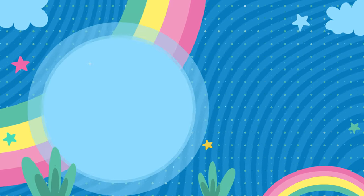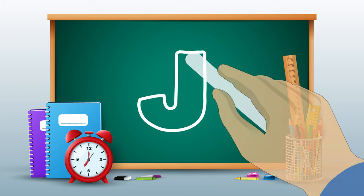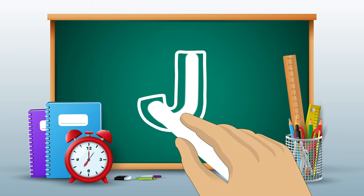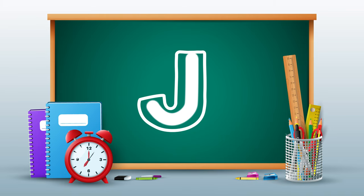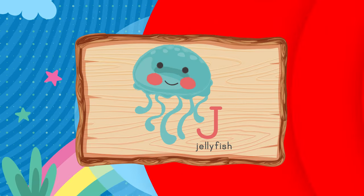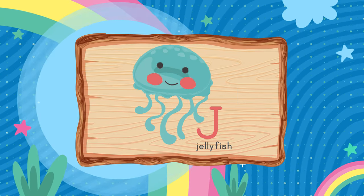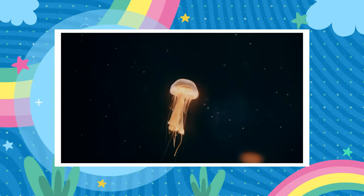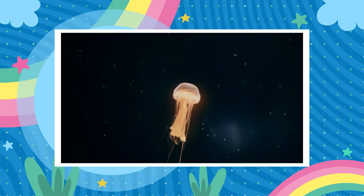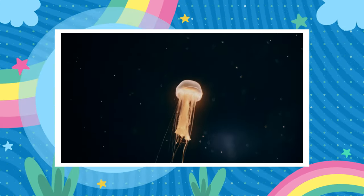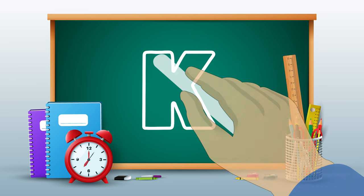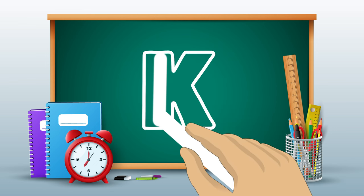Let's go to the next one, the letter J. Pull down, curve around. J is for Jellyfish. Jellyfish. Let's do another one, letter K. Pull down,